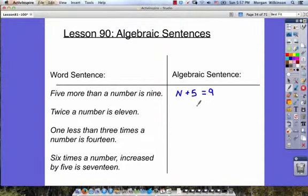Let's look at our next problem. Twice a number is 11. Twice a number? That must be two times n. Twice a number is 11. Well we've got our problem all solved. We've written our algebraic sentence.